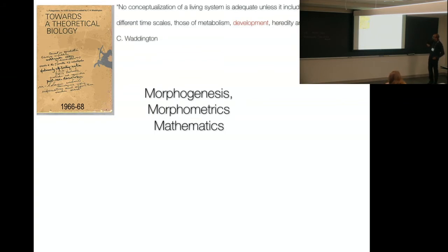And in this, Waddington says no conceptualization of a living system is adequate unless it includes at least four importantly different timescales: those of metabolism, development, heredity, and evolution. Waddington is very much a developmental biologist but also a very broad thinker.